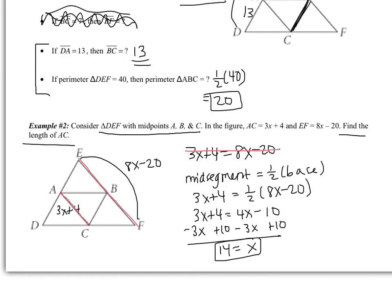The question says, find the length of AC. So I still have to substitute that back in. I have AC is equal to 3X add 4, so that's 3 multiplied by 14 add 4, which is 46 units.